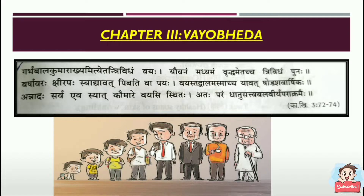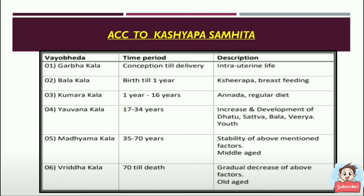According to Kashyapa Samhita, the time period from conception till delivery is called Garbakala, which is the intrauterine life. The period from birth till 1 year is Balakala, during which Shirapa and breastfeeding are done. The age from 1 to 16 years is Kumarakala, during which Annada and regular diet is followed. From 17 to 34 years of age it is called Yuvana Kala.